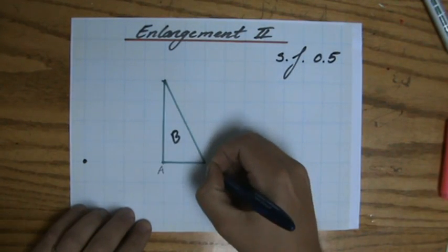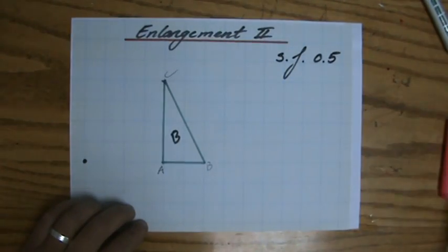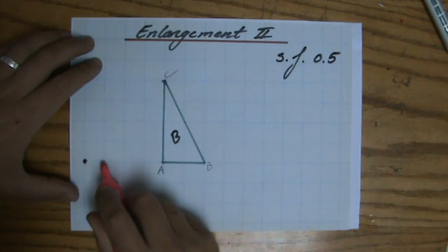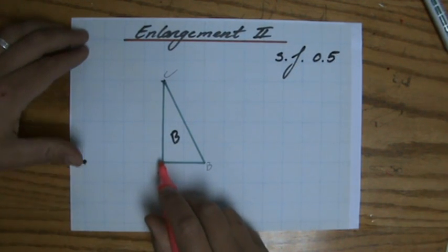Let me just name those vertices A, B, and C. And I have my center of rotation. I'm going to use pink again. From my center of rotation to point A is 1, 2, 3, 4 blocks.